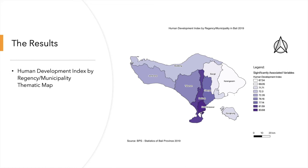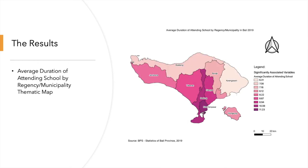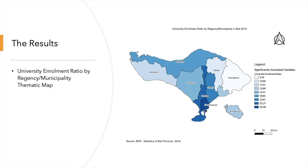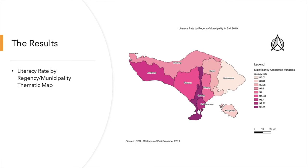Human Development Index has a significant association with the percentage of poor people. From this map, we can see that the regency with the lowest Human Development Index is Karangasem Regency at 67.34%. Average duration of attending school is also significantly associated with the poverty incidence. Karangasem Regency also has the lowest average duration of 6.31 years. From the University Enrollment Ratio thematic map, only 6.16% of Karangasem population in the age of attending university actually enrolled in universities. From the Literacy Rate thematic map, Badung Regency has the highest literacy rate of 99.81%, while in Karangasem Regency only 85.01% of its population are able to read and write.